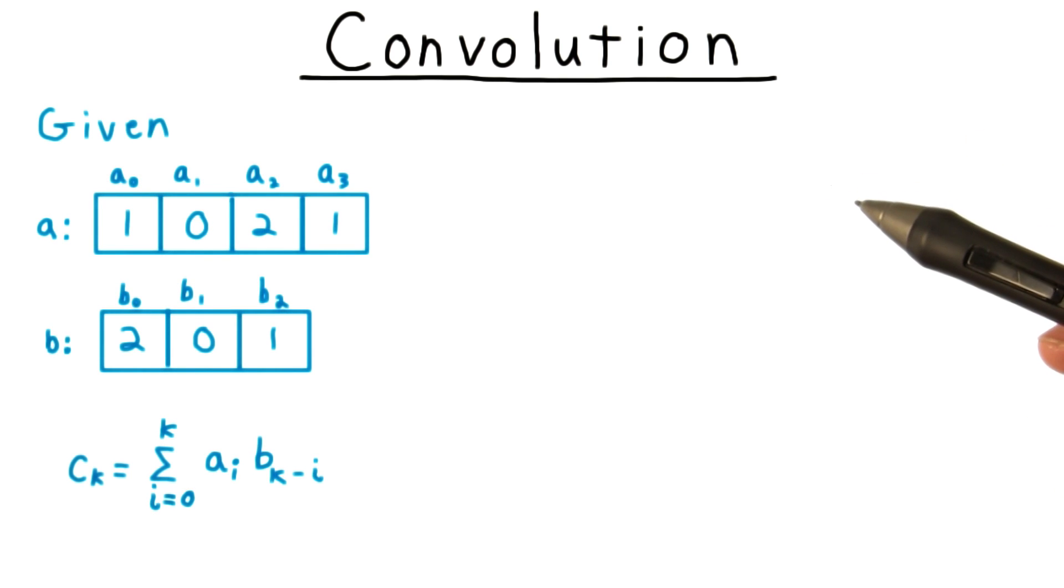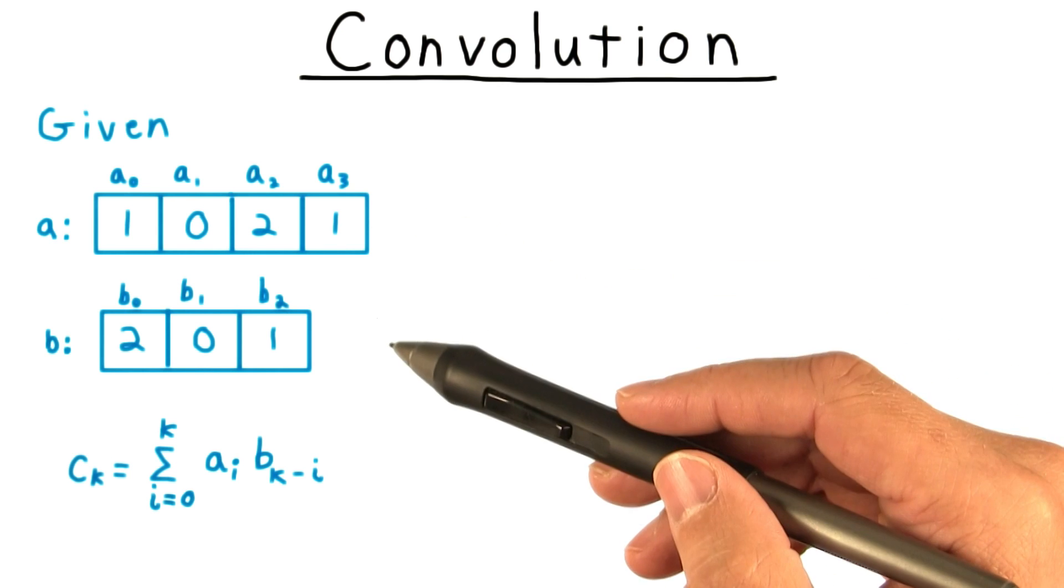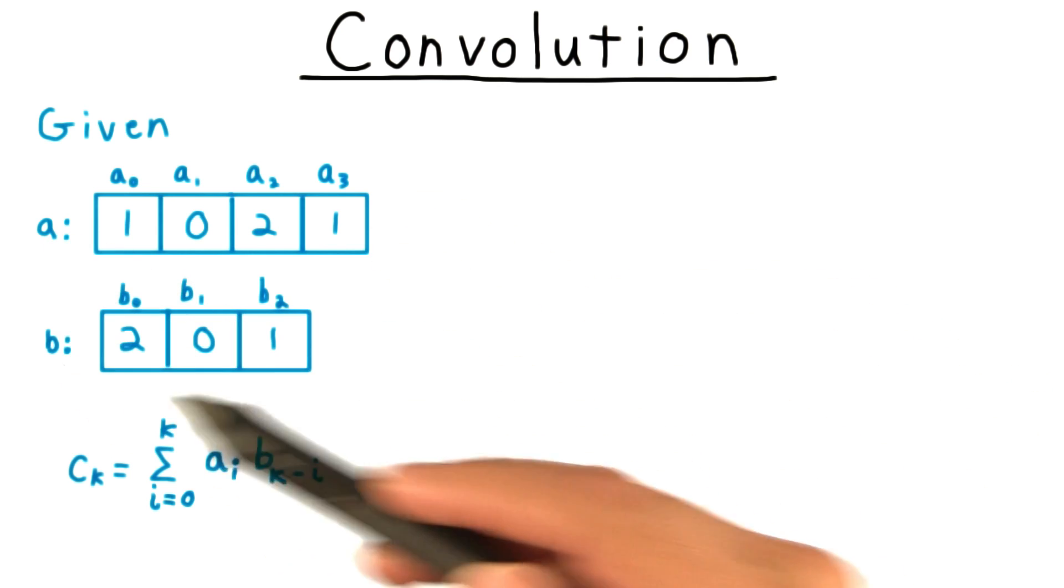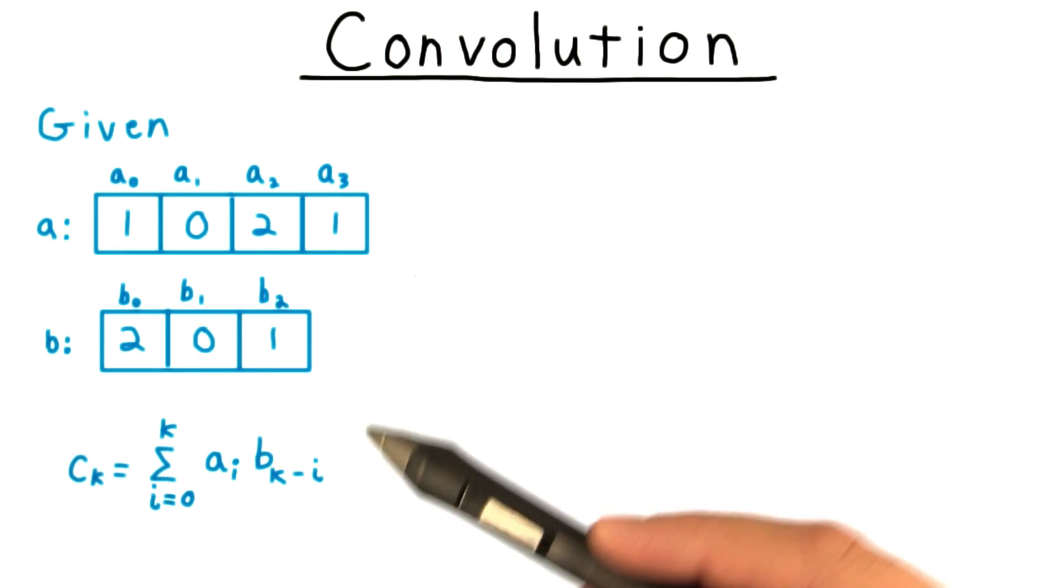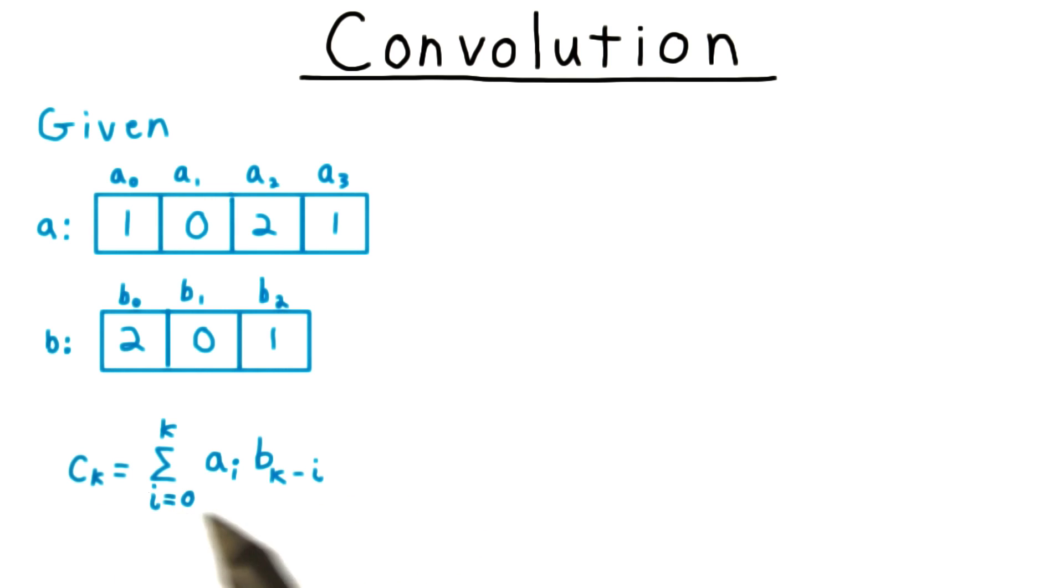We'll illustrate convolution by an example. We're given two sequences of numbers shown here. We'll call them a and b. And we want to obtain a new sequence defined by this formula here, where the kth element in the sequence is the sum from 0 to k over i of ai times b sub k minus i.